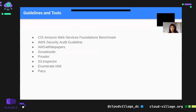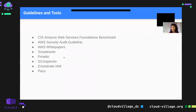Some guidelines and tools that can help: AWS whitepapers have good documentation. AWS Security Audit Guidelines, Scout Suite for automated CIS benchmark auditing for multi-cloud environments, Prowler for automated auditing specific to AWS, S3 Inspector to analyze what kind of permissions are configured — whether publicly accessible or allowing any authenticated user to perform any action — and Enumerate IAM to check what kind of access a particular user has. Also PACU for AWS penetration testing.